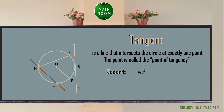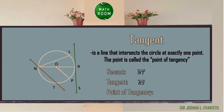We also have the tangent line. It is a line that intersects the circle at exactly one point. This point is called the point of tangency. On the given circle O, the tangent line is line RS, and the point of tangency is point R, since that is the point where the line touches circle O.